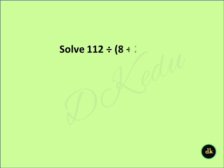Solve: 112 divided by (8 plus 2 times 4) minus 7. Answer: 0.